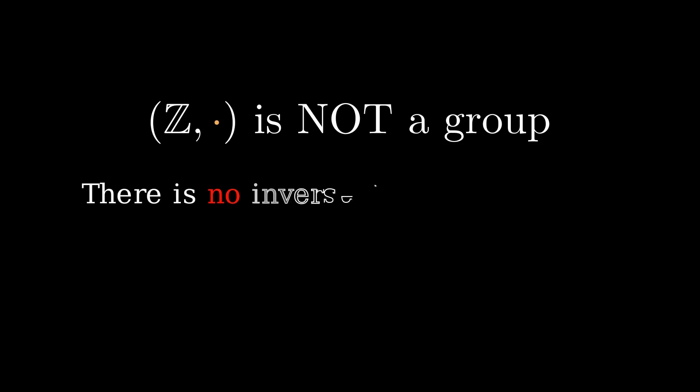Not every integer has a multiplicative inverse that's also an integer. Take the number two, for instance. There's no integer that you can multiply by two to get one. The only number that does that is one half, which isn't an integer. This means that even though we're working with the same set, the operation changes everything.